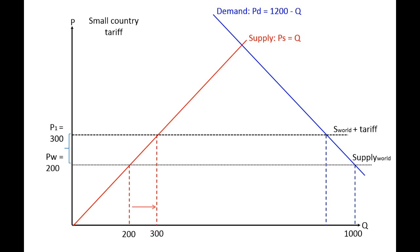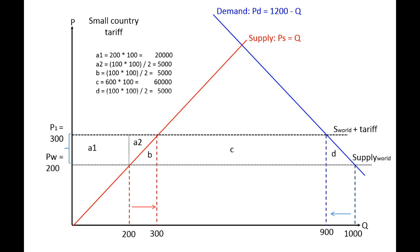Looking at each area: A1 = 200 × 100 = 20,000. A2 = (100 × 100) / 2 = 5,000. Area B = (100 × 100) / 2 = 5,000. Area C (tariff revenues) = 600 × 100 = 60,000. Area D = 5,000, which equals area B in this case.